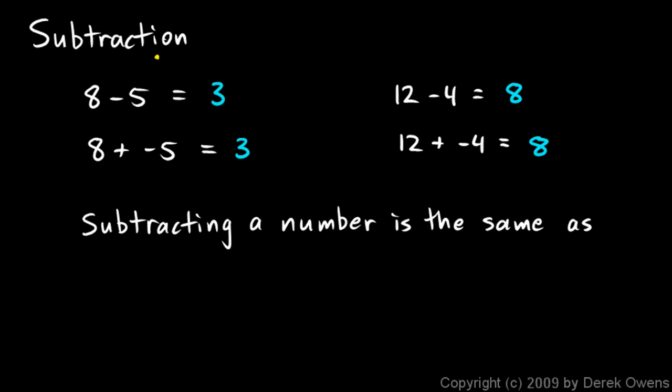So in this case, subtracting 5 is the same thing as adding negative 5. And over here, subtracting 4 is the same thing as adding negative 4. In both cases, subtracting a number is the same thing as adding its opposite.